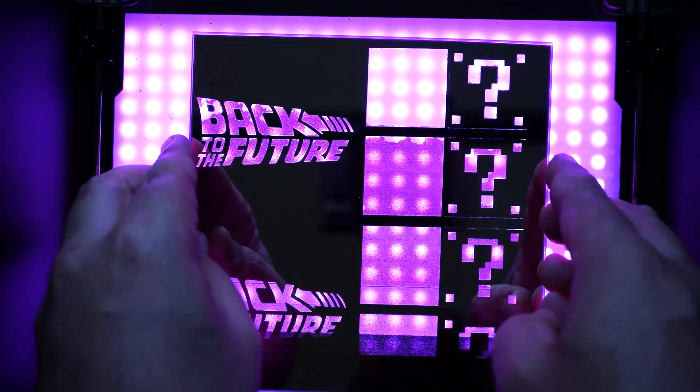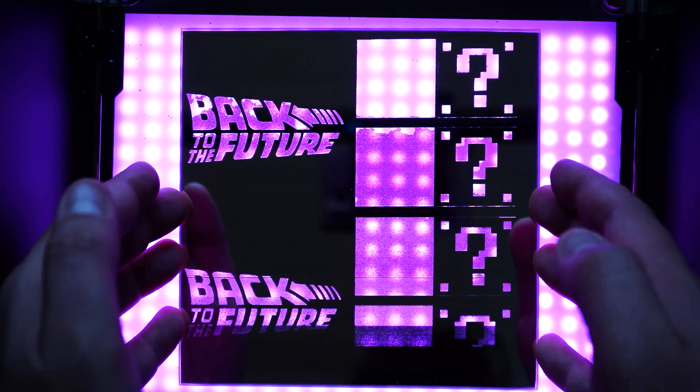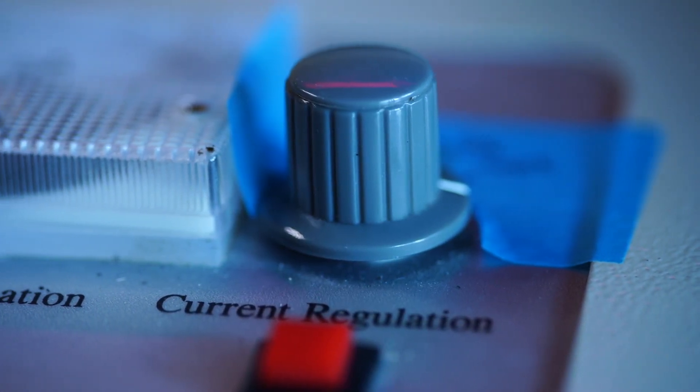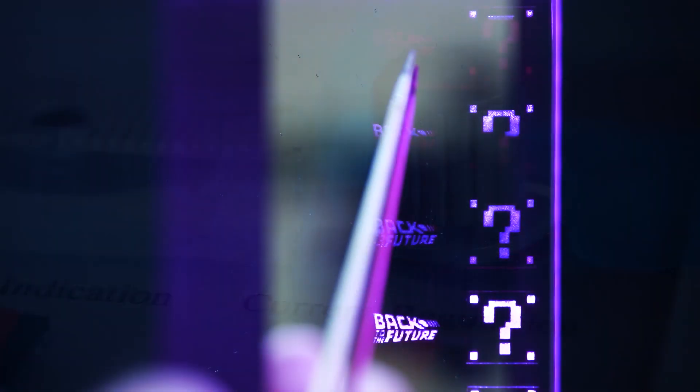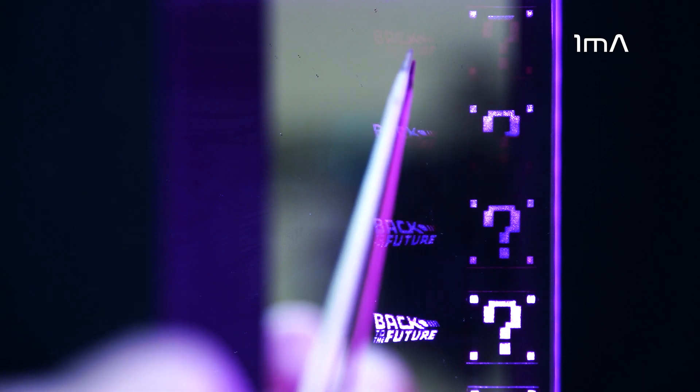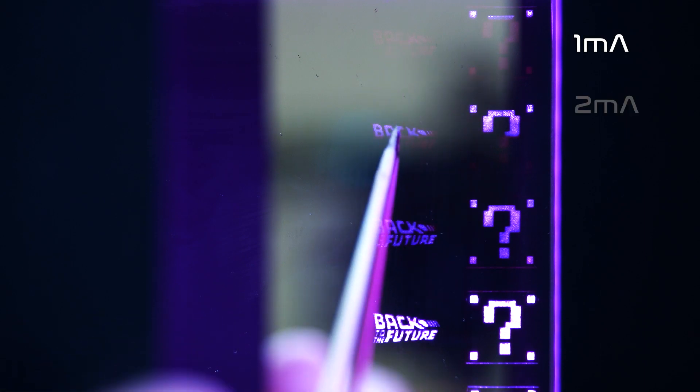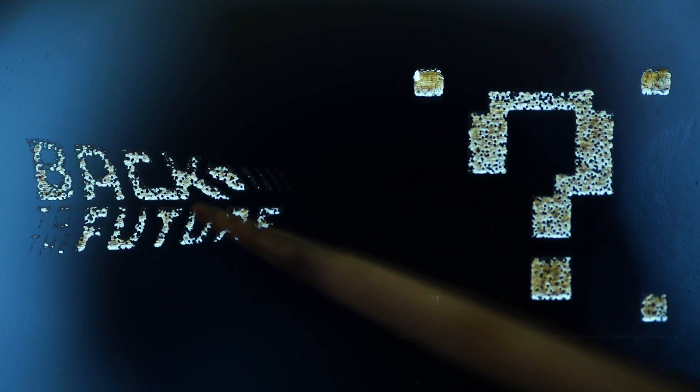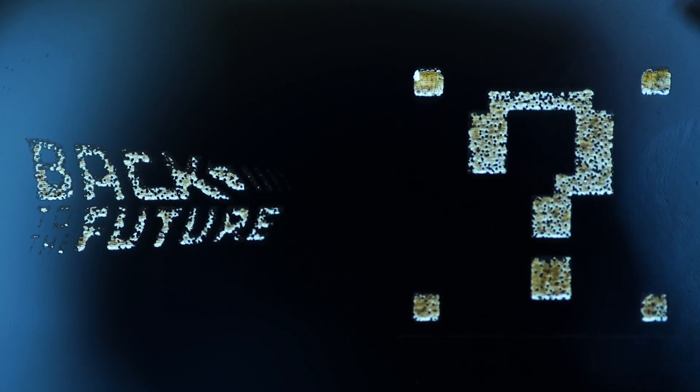So I made some test engravings. I started at 1 milliamp going up all the way to 15 milliamps. 1 milliamp, what by the way is the point on the potentiometer where the laser barely emits any laser light at all, is too weak to burn away anything. 2 milliamps burns off some of the coating but is not powerful enough to reproduce fine details like these stripes here on the Back to the Future logo.